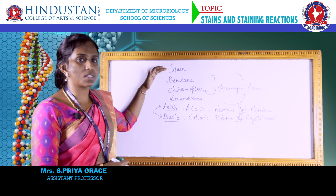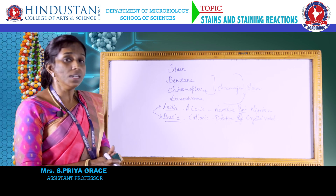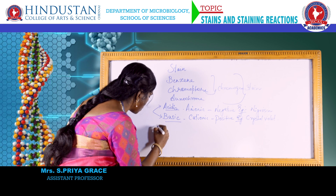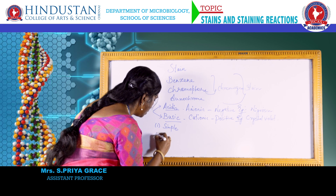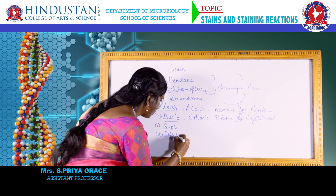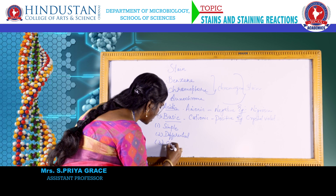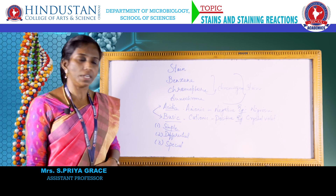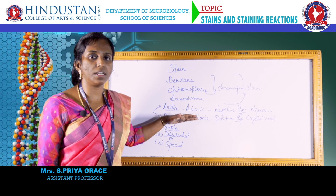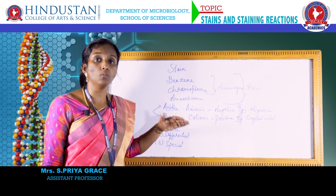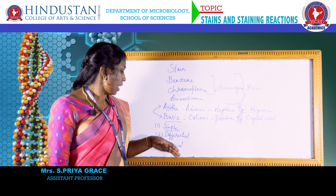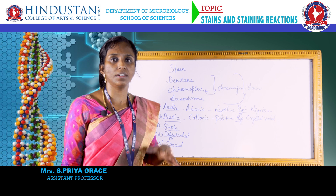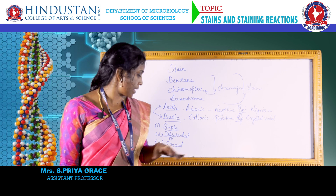Now let us see about the types of staining techniques used to visualize microorganisms. There are basically three types: simple staining, differential staining, and special staining. Simple staining is done with a single reagent, differential staining uses more than one reagent, and special staining is done to visualize special structures of the bacterial cell like the nucleus or flagella.